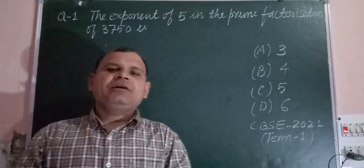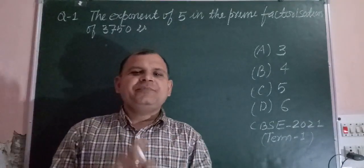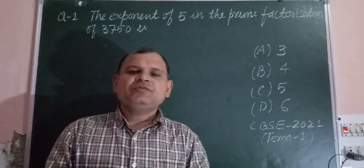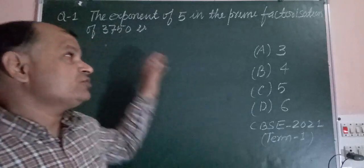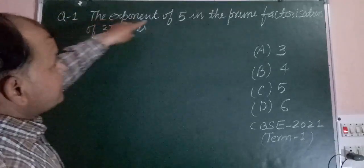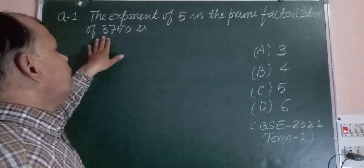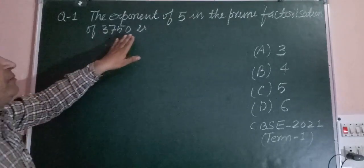Hello students, welcome back to CBSE class 10 math term first solution series. Here is a question from CBSE board exam: Question 1 is the exponent of 5 in the prime factorization of 3750.